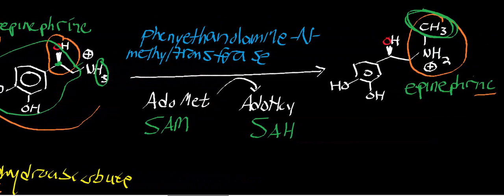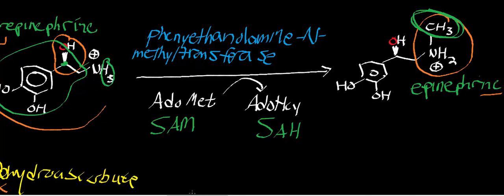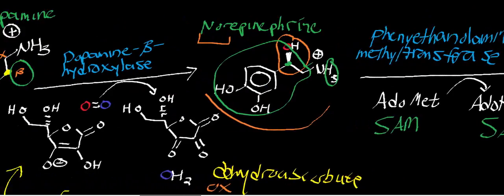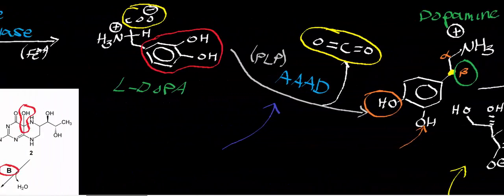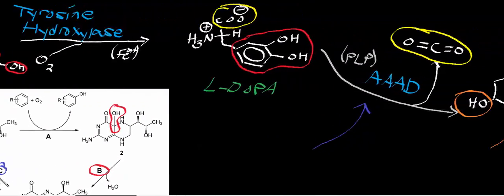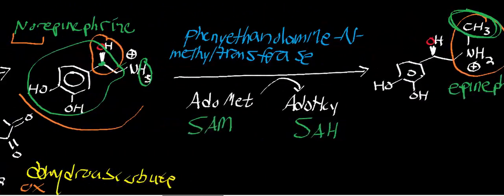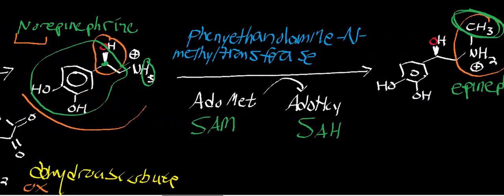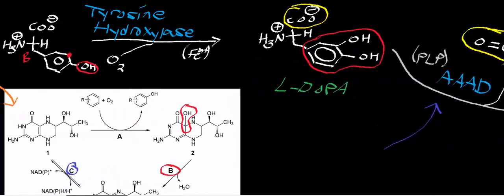Norepinephrine is consumed by phenylethanolamine N-methyltransferase in an S-adenosylmethionine-dependent methyl transfer to the amine of norepinephrine to make epinephrine — or taking noradrenaline to make adrenaline. Phenylethanolamine N-methyltransferase would only be expressed in cells making epinephrine, like the chromaffin cells or certain brainstem cells. I hope this video gave you intuition on catecholamine biosynthesis. It's important to think logically about which cells make which enzymes and which do not. See you in the next video.